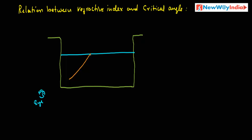The light ray strikes the surface of the water. This is the normal to the surface. The light ray AB is travelling in the optically denser medium — this is water. Here it is the optically rarer medium — this is air.